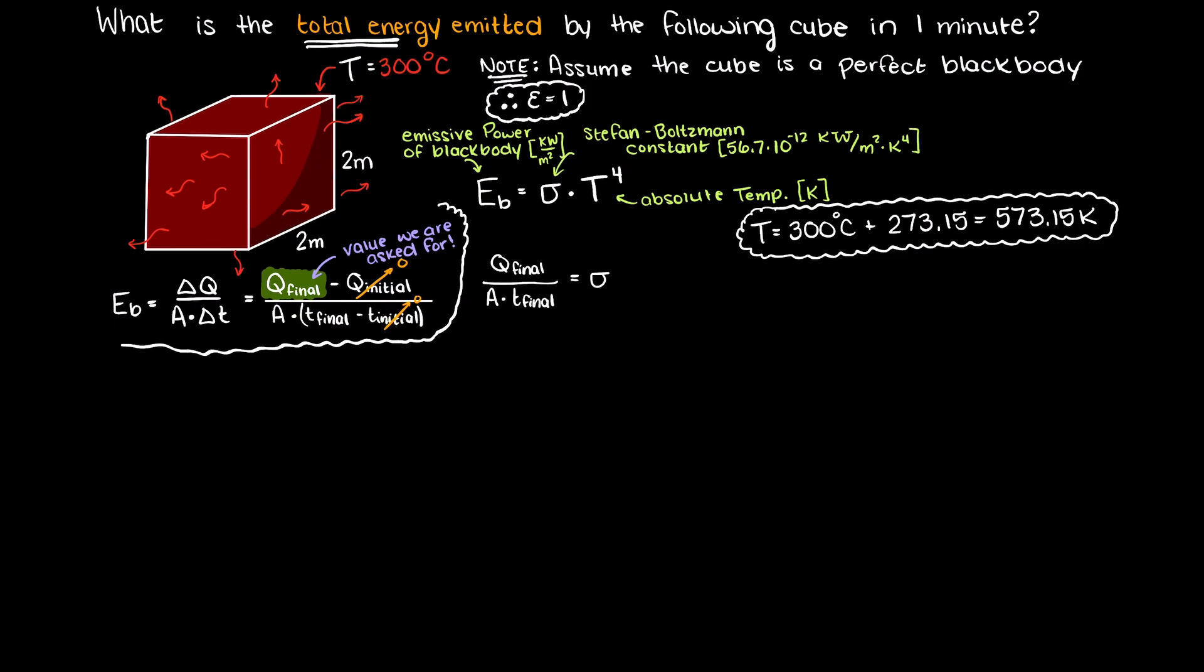So, let's multiply both sides of our equation by the area and time, and this isolates our total energy at our final time.